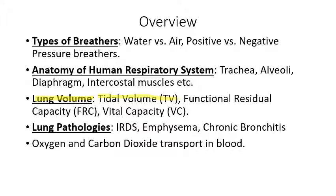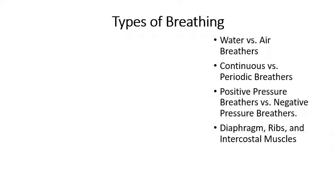I'll close off some of these lectures by talking about pathologies of the organ system — pathology is a branch of medicine that deals with the study of things going wrong with the human body. I will discuss some lung pathologies, including infantile respiratory distress syndrome, emphysema (which is frequently caused by smoking), and chronic bronchitis, an usually inherited condition where the airways are constantly inflamed. We'll also briefly discuss how oxygen and carbon dioxide are transported in the blood — oxygen is carried by hemoglobin molecules present on red blood cells.